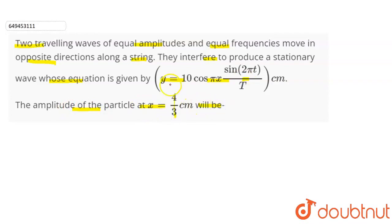So I have to tell you the particle amplitude. Here we have the standing wave equation given, and you can know the standing wave amplitude: 10 cos πx into sin 2π/T into t. This is given. This angle was given. This is in centimeter.